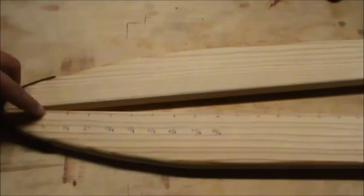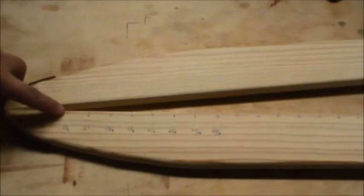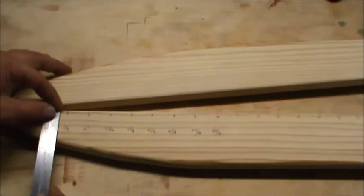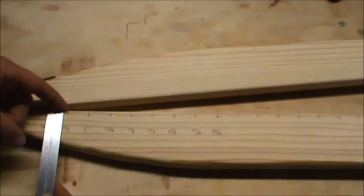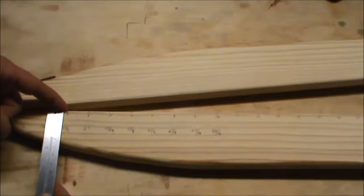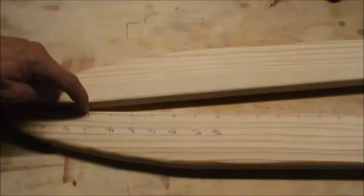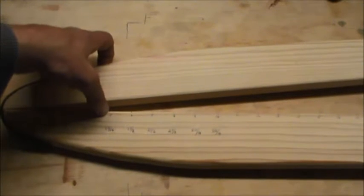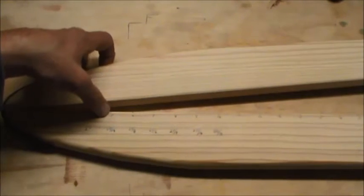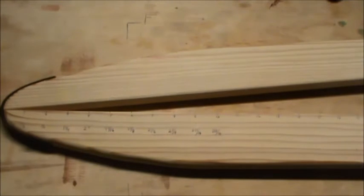At the second inch it's one and a half, at the third inch it's one and three-quarters, at four it's two inches, at five it's two and three-sixteenths, at six it's two and three-eighths, at seven inches it's two and a half, at eight it's two and five-eighths, at nine it's two and eleven-sixteenths, and at ten it's two and eleven-sixteenths as well.